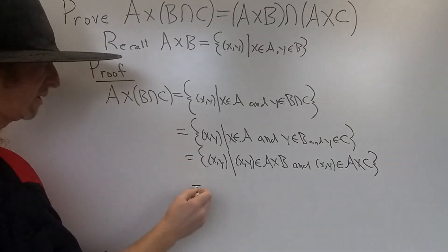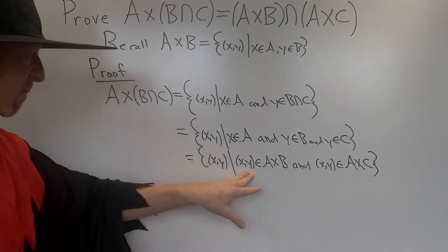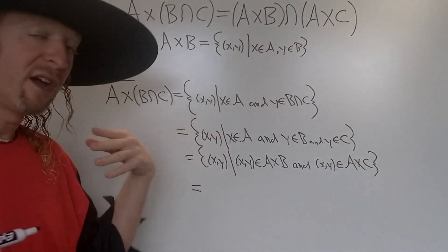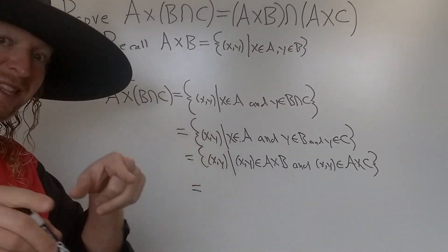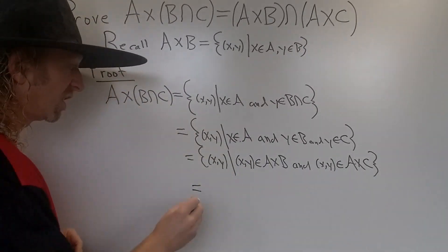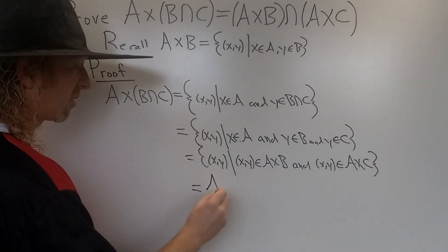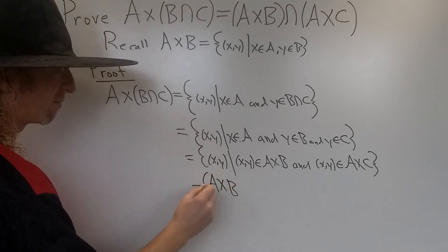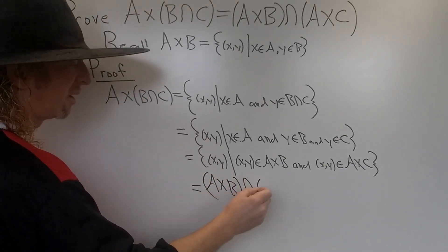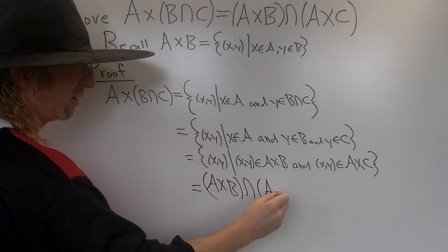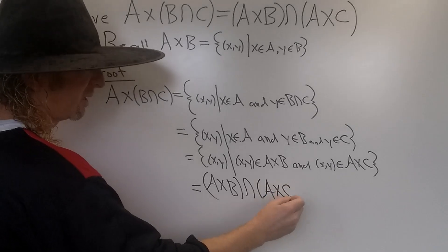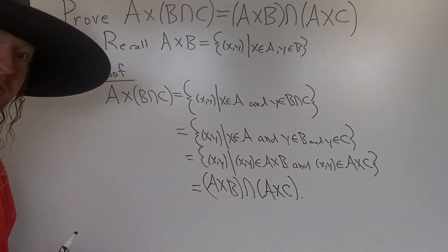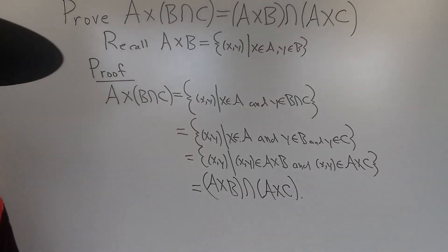So what do we have here? We have that the ordered pair is in A cross B and it's in A cross C. Therefore it is in the intersection — A cross B intersected with A cross C. That's it. I hope this video has been helpful. Until next time, take care.